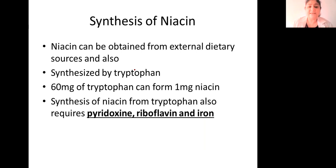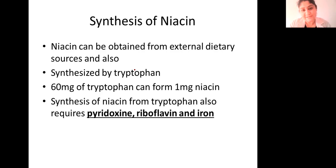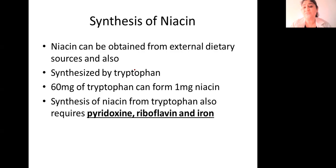Synthesis of niacin: niacin can be obtained from external dietary sources, but it is also biosynthesized in the body from an amino acid — tryptophan, an aromatic amino acid. To produce 1 mg of niacin, the body needs sufficient stores of tryptophan; around 60 mg of tryptophan is required to produce 1 mg of niacin.